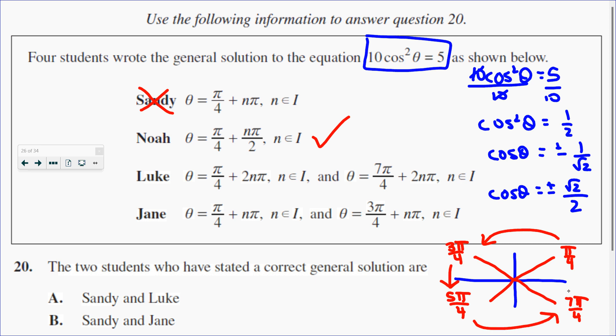So that is correct. Let's look at the next one. Luke says pi over 4 plus 2 pi n and 7 pi over 4 plus 2 pi n. So Luke is only getting the pi over 4 and the 7 pi over 4, forgetting about 3 and 5. So Luke is not correct.